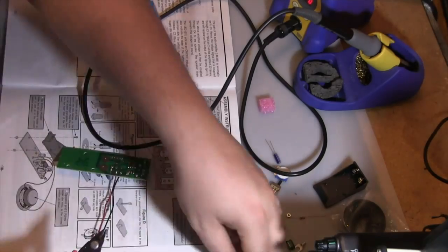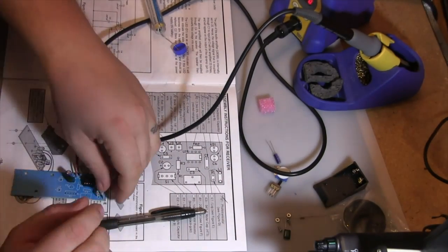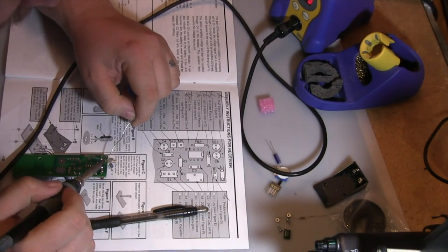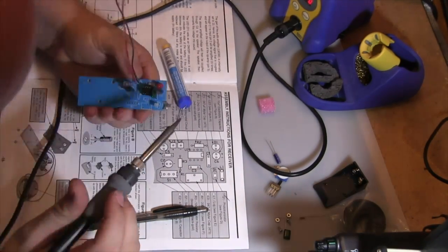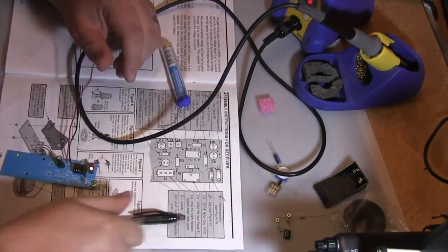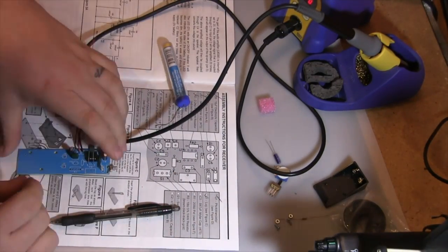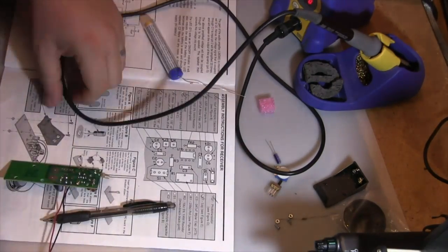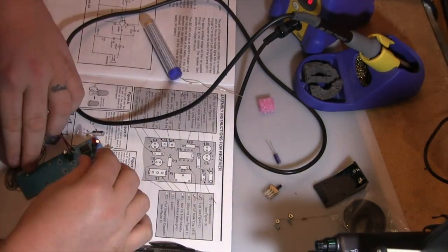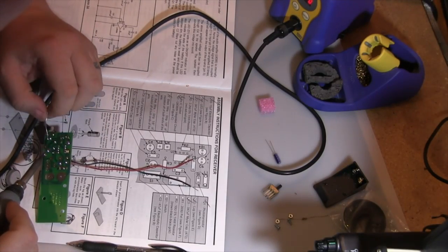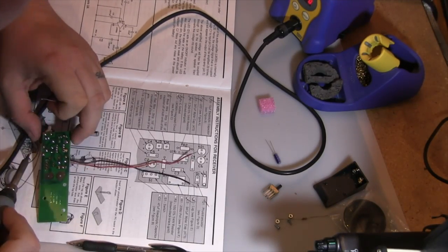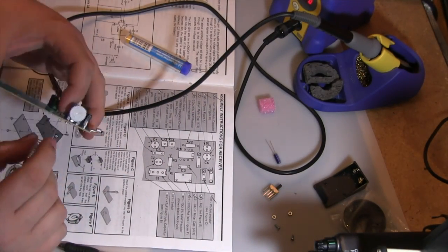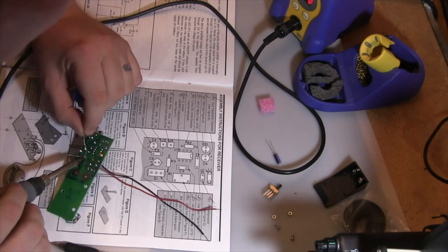The photo transistor has to be installed in a certain way for it to work correctly. There's a little dimple on one side that has to be facing toward the fiber optic cable.